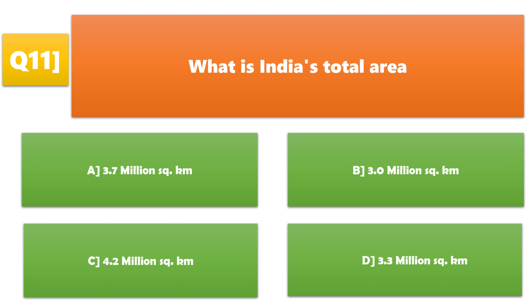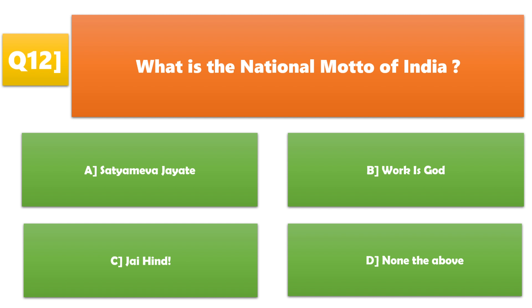What is India's total area? A. 3.7 million square kilometers, B. 3 million square kilometers, C. 4.2 million square kilometers, D. 3.3 million square kilometers. D. 3.3 million square kilometers is the correct answer.